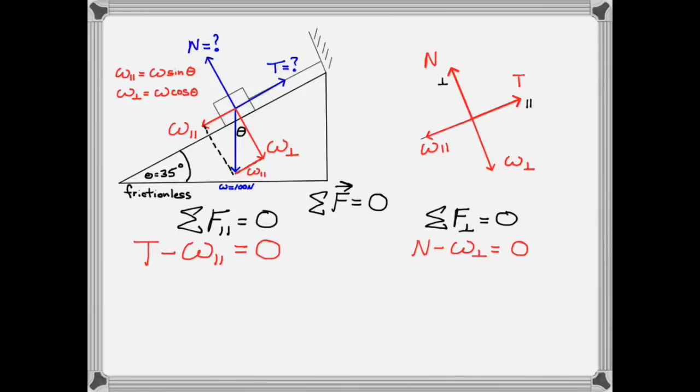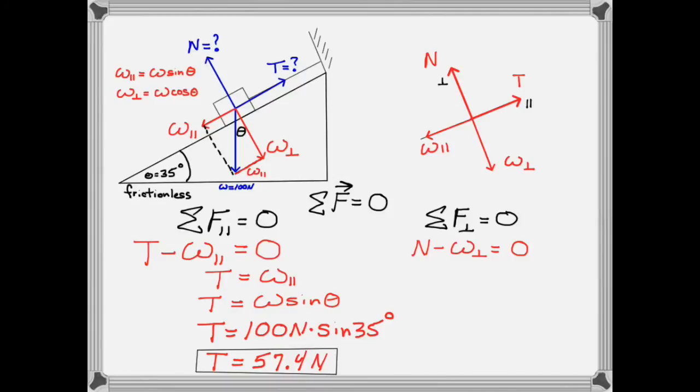Now if we want to solve for the tension we will go over to the parallel equations and solve for tension. After that we will use the trigonometric relation that we found above to substitute for W parallel and call it W sine theta. Now we just have to put the numbers in and complete the calculation and we get our answer for the tension 57.4 newtons.